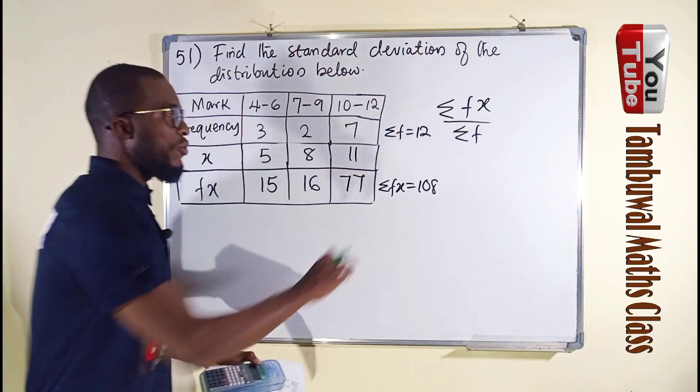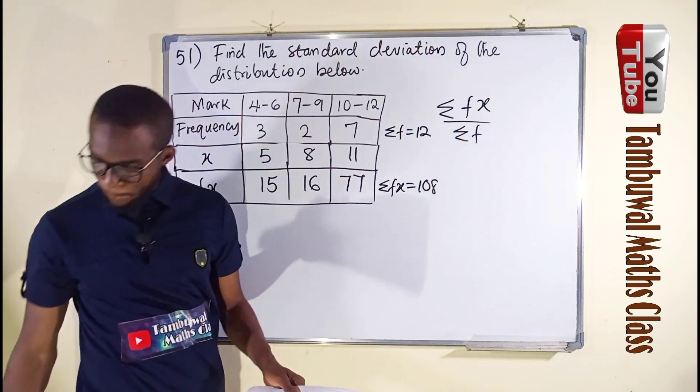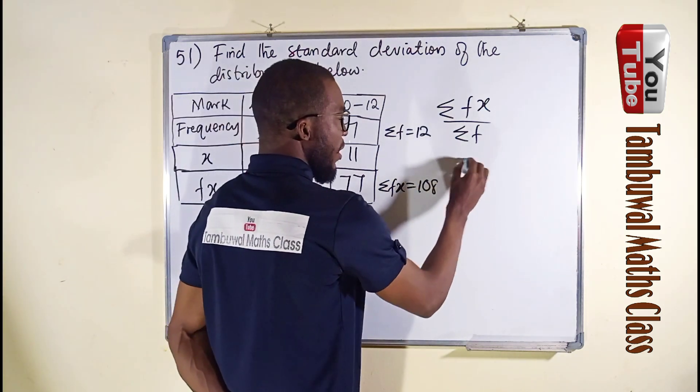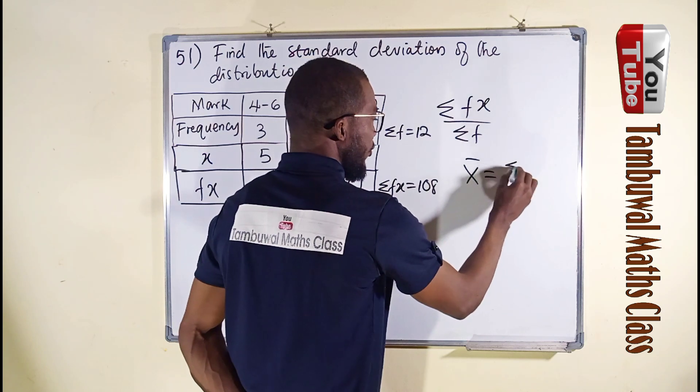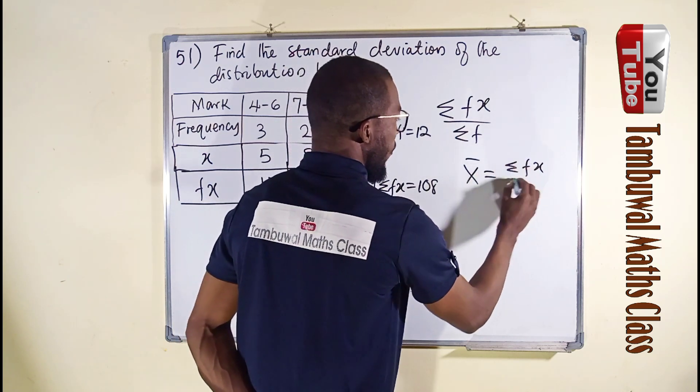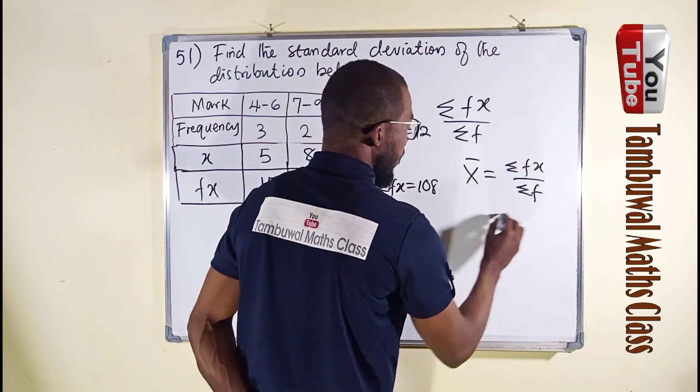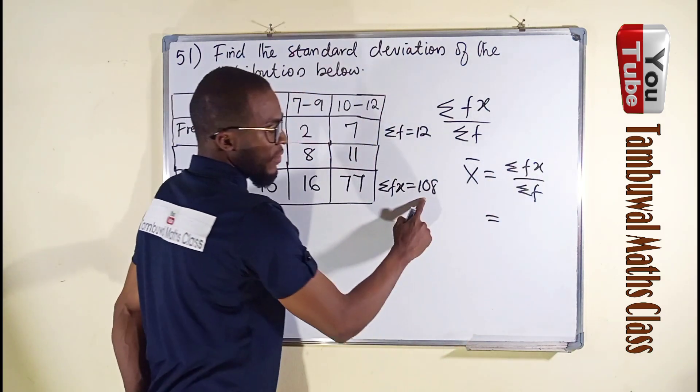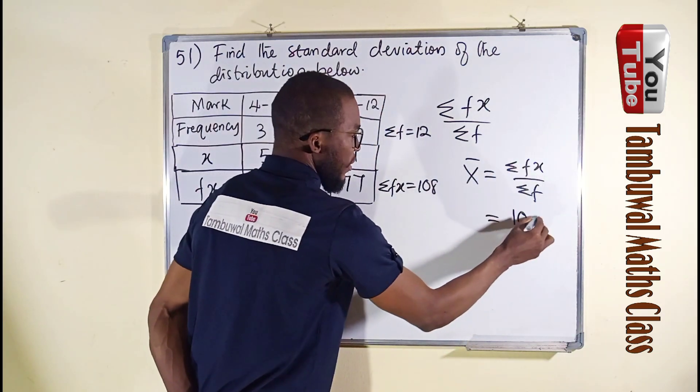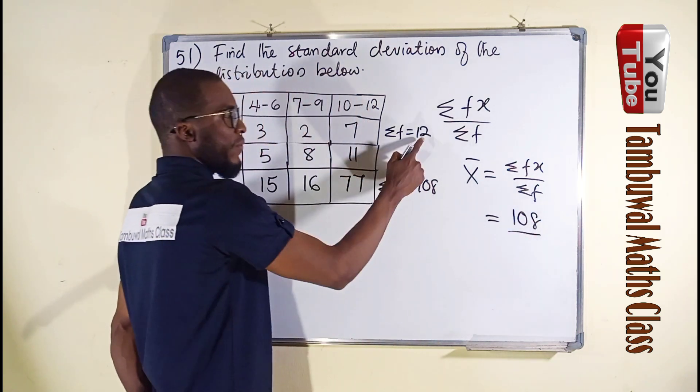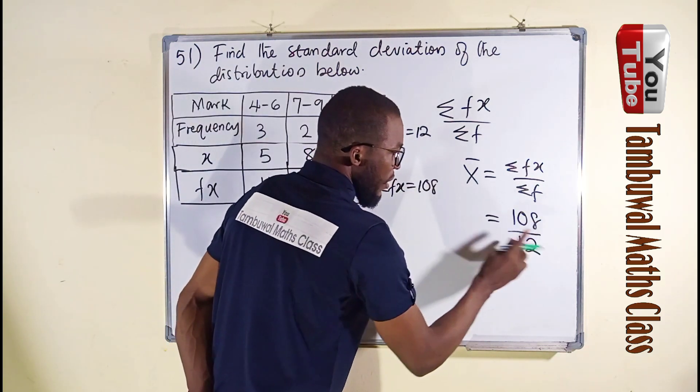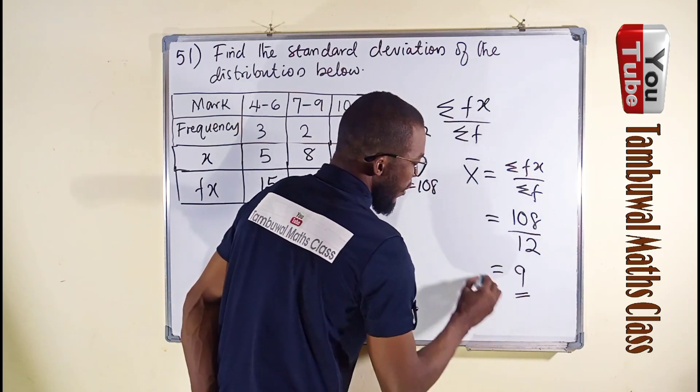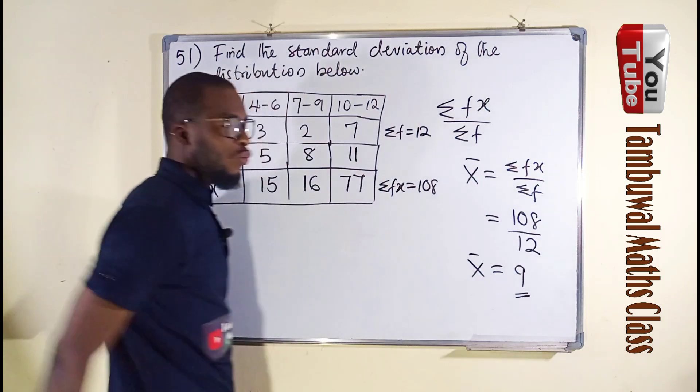Now we are free to use these two information to find our mean. Mean is denoted by x bar, which is the same thing as summation of fx over the summation of f. Just substitute. Summation of fx, you can see it here as 108. Summation of f, you can see it here as 12. If you divide this by this, you get 9. So our x bar is equal to 9.